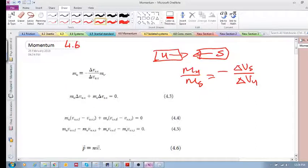The ratio of the inertias is equal to the inverse of their changes in velocity. So if we rewrite this, we get this equation, and then we get this equation. We get m delta v of the unknown plus m delta v of the standard.